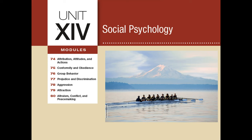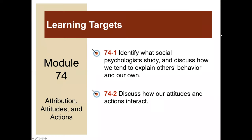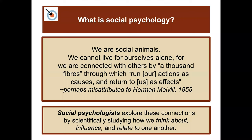Welcome to Unit 14: Social Psychology. These slides go along with Myers' Psychology for the AP Course, Third Edition. Today I'm going over Module 74: Attributions, Attitudes, and Actions. There are only two learning targets for this module: identify what social psychologists study and discuss how we tend to explain others' behavior and our own behavior, and discuss how our attitudes and actions interact.